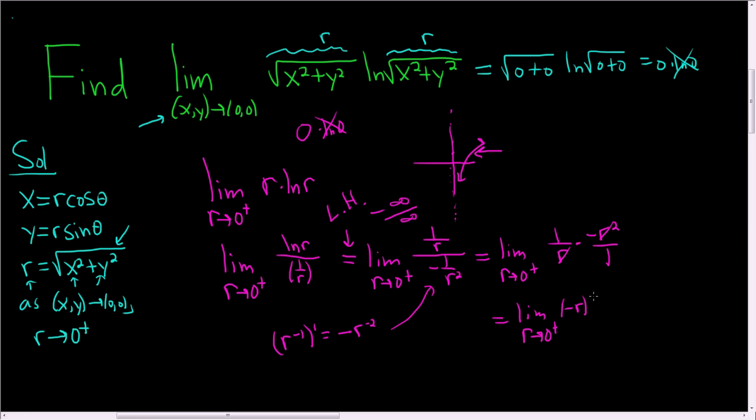And now we can go ahead and plug in 0. And keep in mind, this limit exists independent of theta. So this is always equal to 0, regardless of which direction we approach from. So the limit does indeed exist, and it's equal to 0. That's it.